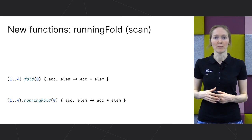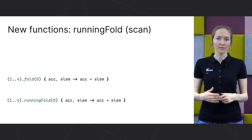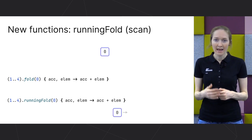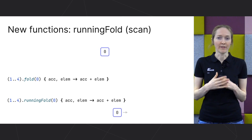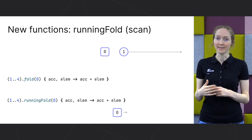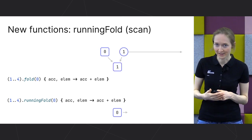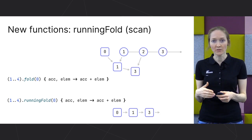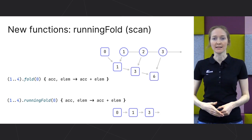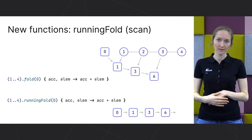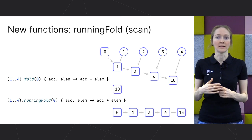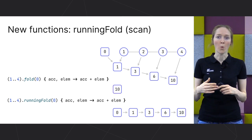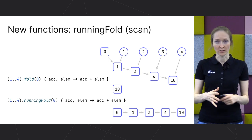runningFold, as well as fold, takes an initial value, and it's already the first result. Then it combines the initial value with the first element — that's the second result. As it continues, runningFold reports an intermediate result after analyzing each part of the list. runningFold returns a list or sequence of all the intermediate values, while fold returns only the final resulting value.